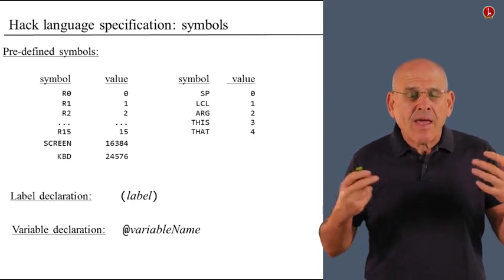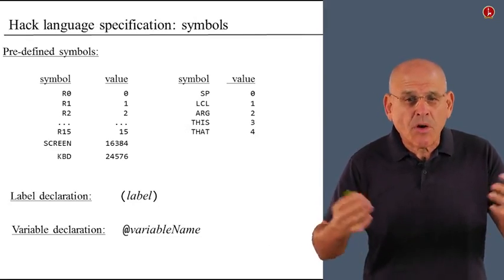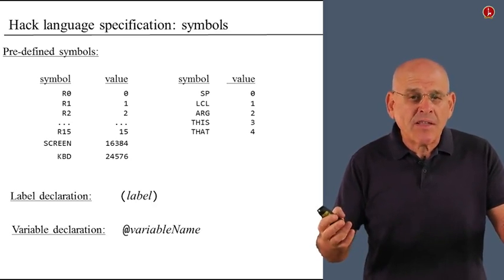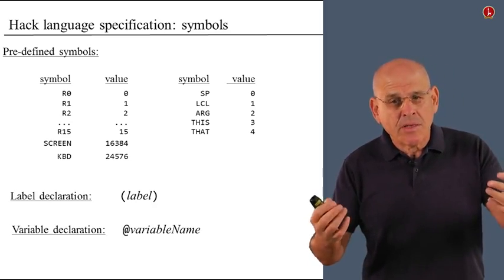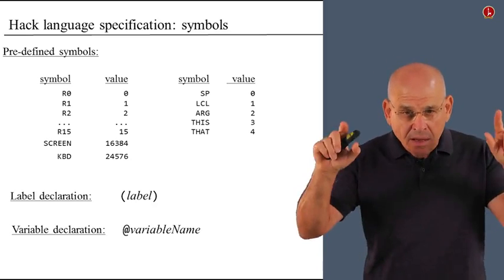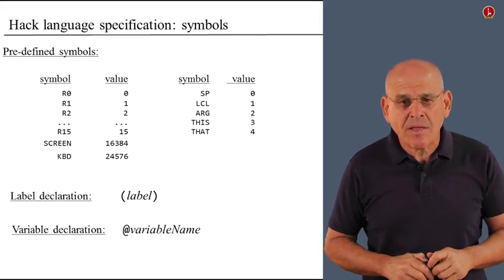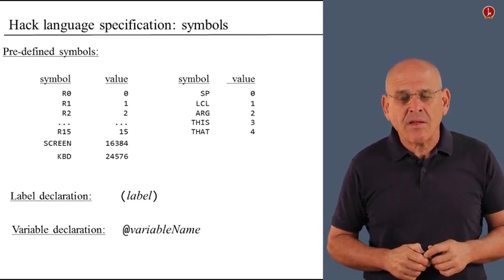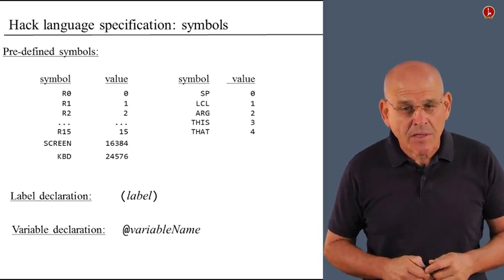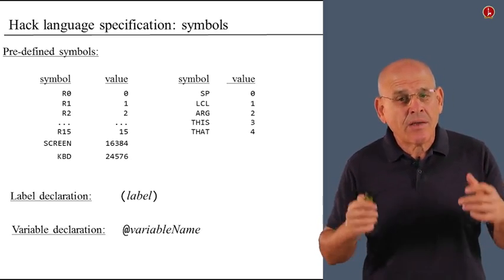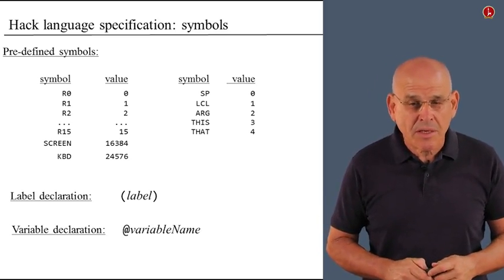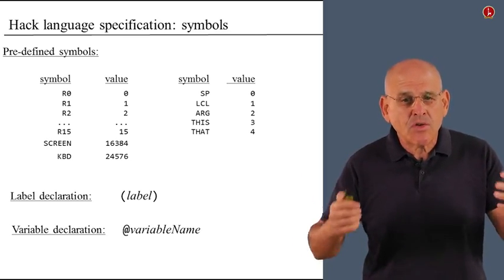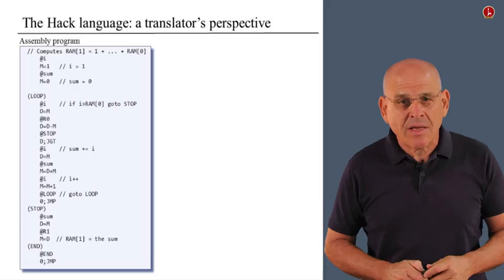And finally, the Hack language features symbols. The programmer is invited to use some predefined symbols, and also the programmer is invited to invent symbols of his or her own, using the label declaration statement and at statements or A instructions that are designed to declare and use variables. This is a complete description of the Hack machine language, and given this description, you should be able to develop the desired assembler.